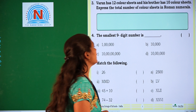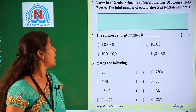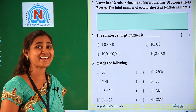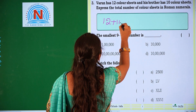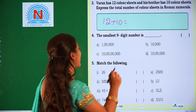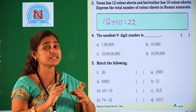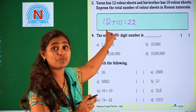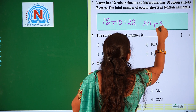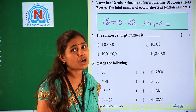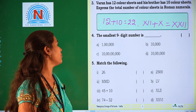Now we will move on to the third question. Varun has 12 color sheets and his brother has 10 color sheets. Express the total number of color sheets in Roman numerals. Varun has 12 and his brother has 10 — together, 12 plus 10 is 22. We have to represent 22 in Roman numerals. 10 is X, so 12 is XII. XII plus X equals XXII. So 22 in Roman numerals is XXII.